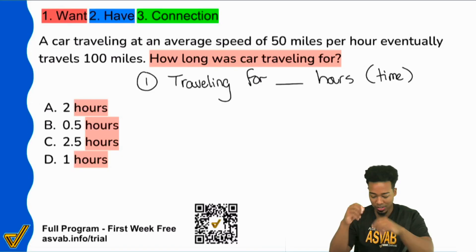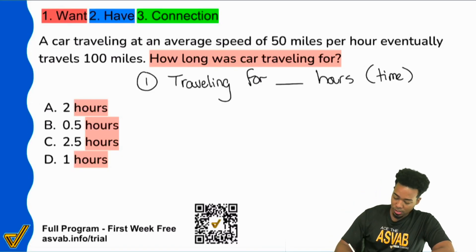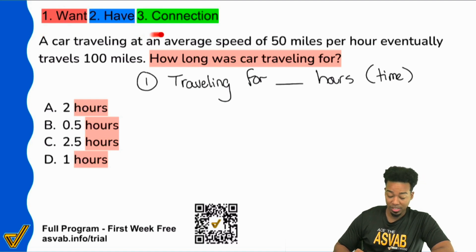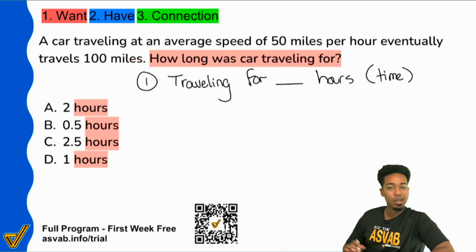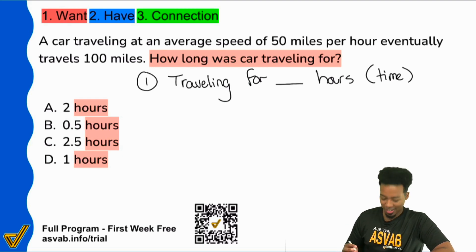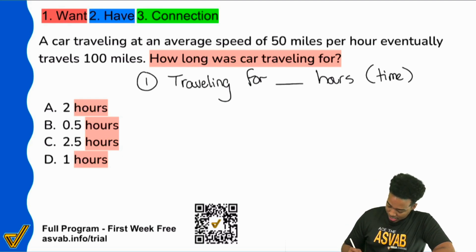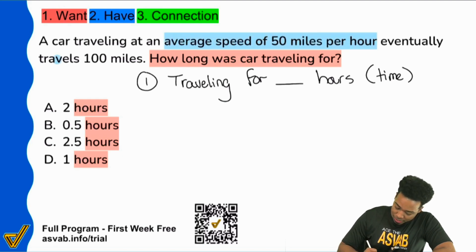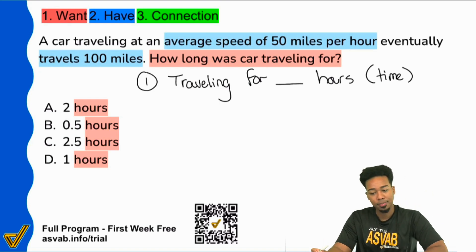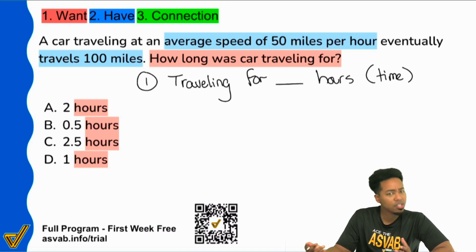So here, watch this — going through the question right here: a car traveling at an average speed of 50 miles per hour eventually travels 100 miles. Let's write this information down so I can prove to you how you know what type of problem this is, what formula to use, and how to plug it in the right way. I see that it says traveling at an average speed of 50 miles per hour, and then it says it eventually travels 100 miles. Let's break that down.